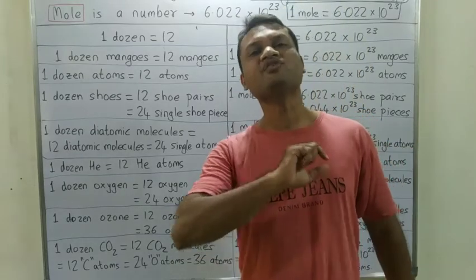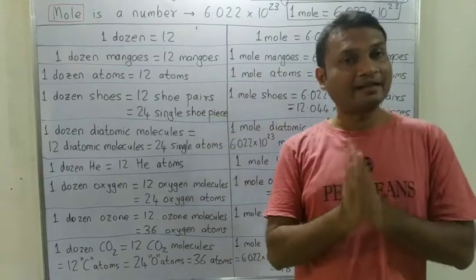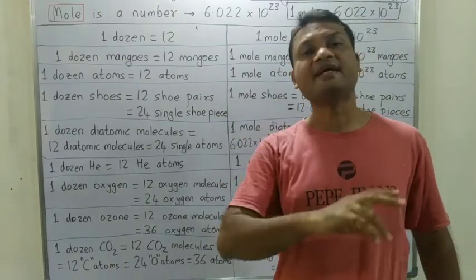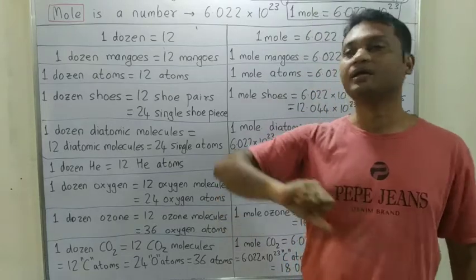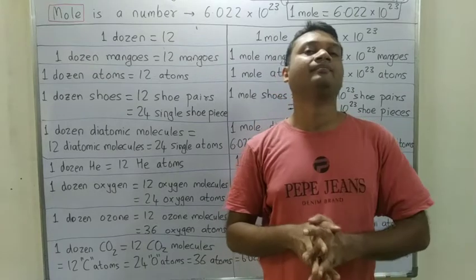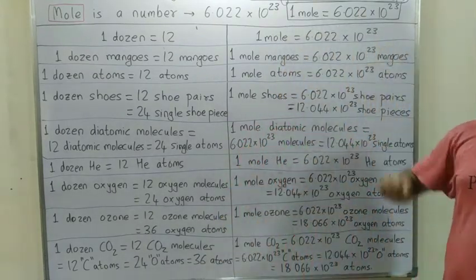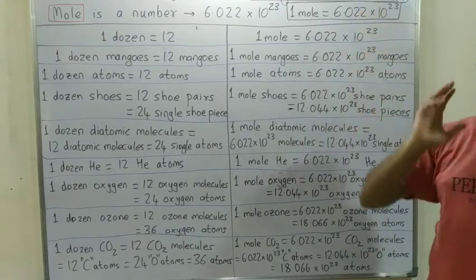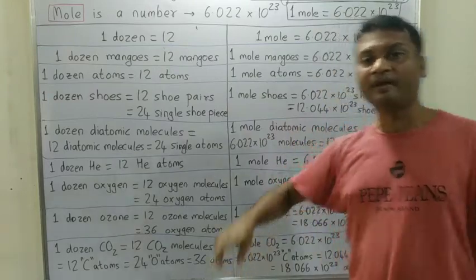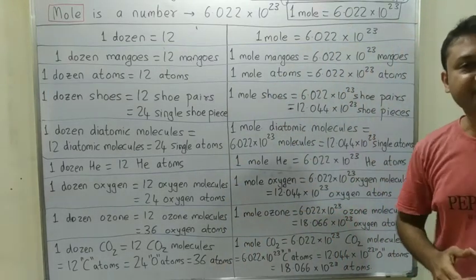So what is mole? Mole is a number. Simple baat — mole ek number hai. Just like 'dozen' is a number. Dozen ka matlab kya hai? 12. Ek dozen matlab 12. To waise hi, ek mole matlab kitna? Bada number hai, but hai ek number hi. Jaise dozen mein 12 hota hai, waise mole mein 6.022 into 10 raise to 23.